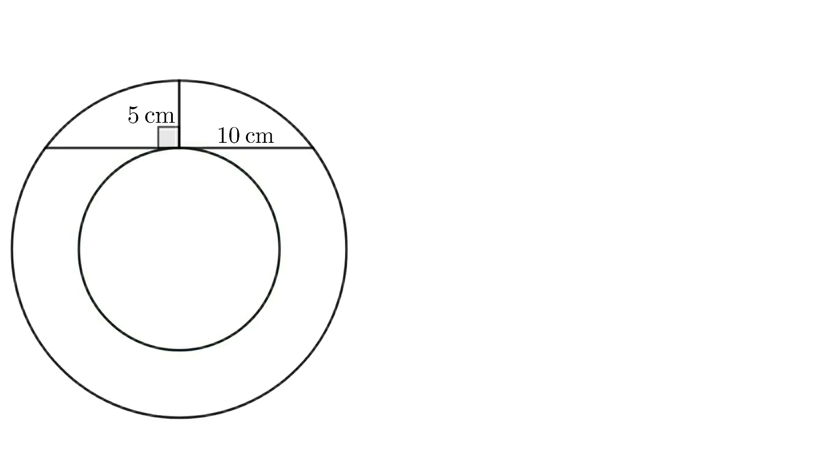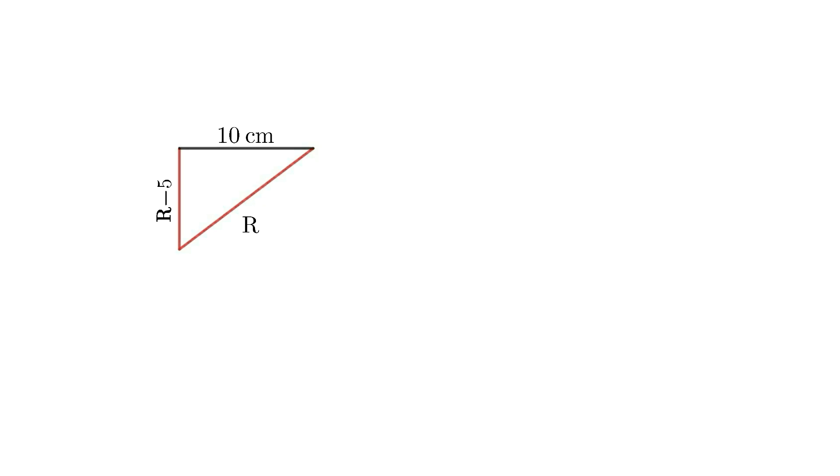We can draw the radius of both circles like this. This forms a right triangle. Let's consider the radius of the bigger circle as R. Then the radius of the smaller circle is R-5. Apply the Pythagorean theorem to this triangle.